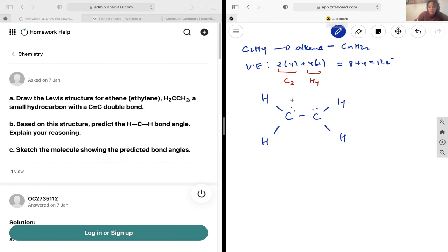Let's count how many valence electrons this would imply: 4, 6, 8, 10, 12, 14. This would imply 14 electrons, but we only have 12. We can fix this issue by getting rid of these two electrons and putting a double bond between the carbons.